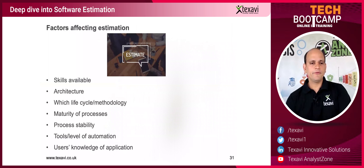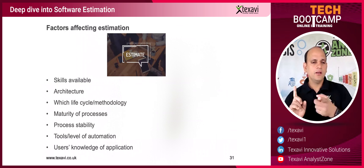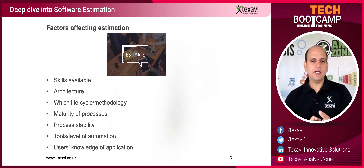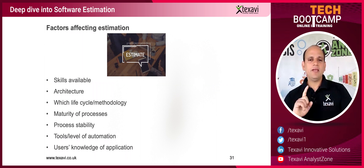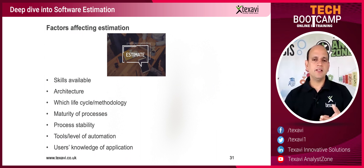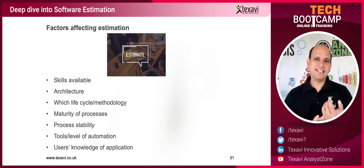Some of the factors that really affect estimation — we've had a look at it already — include the skills available: whether .NET, Java, do we have the database skills, do we have people with user experience skills, designing skills, architecture — all of these would come in.